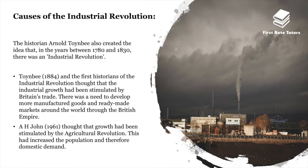When it comes to the causes of the Industrial Revolution, the historian Arnold Toynbee created the idea that in the years between 1780 and 1830 there was an industrial revolution. Writing in 1884, early historians thought that industrial growth had been stimulated by Britain's trade and the need to develop more manufactured goods for ready-made markets through the British Empire. A.H. John in 1961 thought growth had been stimulated by the agricultural revolution, which increased the population and therefore domestic demand.